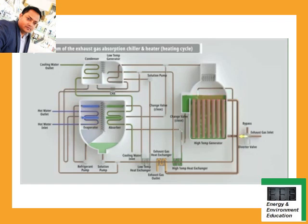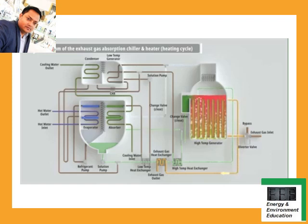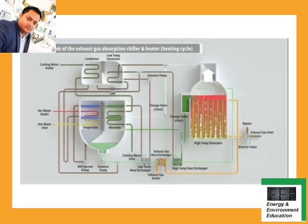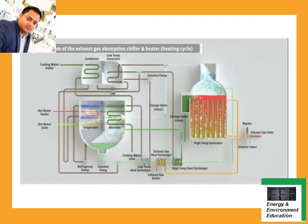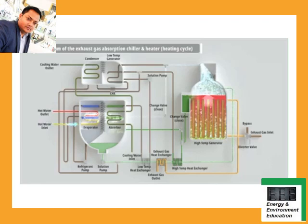The CHP system's heating works in simpler logistics. Heated by incoming exhaust gas in the high-temperature generator, the solution releases refrigerant into vapor, becoming concentrated solution, which flows to the absorber. High-temperature vapor flows to the evaporator, heating up incoming hot water. The vapor, condensed to liquid by releasing heat, is then mixed into the solution in the absorber and flows to the high-temperature generator, repeating the cycle.